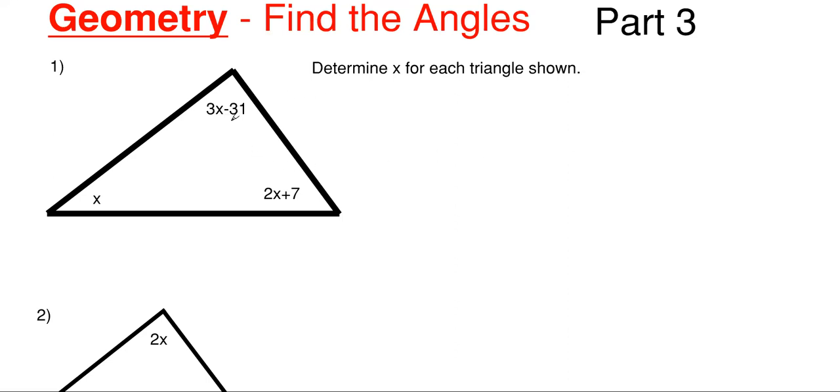So our first one, we have a variable of x as an angle here. This angle up here is denoted as 3 times x, then minus off 31 degrees, and this one down here is 2 times x plus 7. So we need to determine x for this triangle here. We know that a triangle has a total of 180 degrees inside of it. What we can do is we can add all these up, and that would total up to 180 degrees, and then we can use some algebra to solve for x.